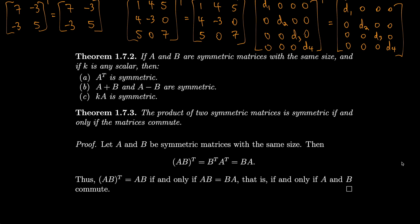The product of two symmetric matrices is symmetric if and only if the matrices commute. To prove this: let A and B be symmetric matrices of the same size. Then (AB)ᵀ equals Bᵀ Aᵀ, which equals BA since both are symmetric. So (AB)ᵀ = BA, meaning AB can equal its own transpose only if AB = BA — that is, if A and B commute.